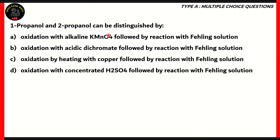1-propanol and 2-propanol can be distinguished by: (A) oxidation with alkaline KMnO4 followed by reaction with Fehling's solution, (B) oxidation with acidic dichromate followed by reaction with Fehling's solution, (C) oxidation by heating with copper followed by reaction with Fehling's solution, (D) oxidation with concentrated H2SO4 followed by reaction with Fehling's solution.